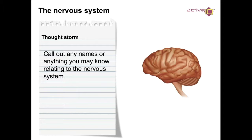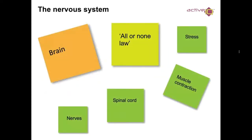Call out all the names of anything you may know relating to the nervous system — jot them down and pause, then come back. Hopefully you were shouting out things like the brain, the nerves, the spinal cord, muscle contraction, stress, the all-or-nothing law, the peripheral nervous system, and the somatic nervous system.